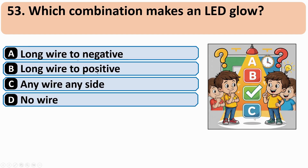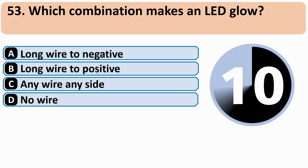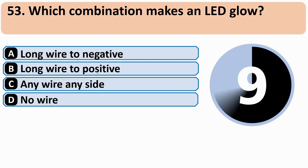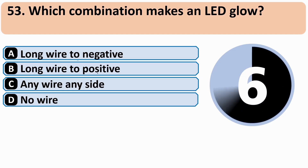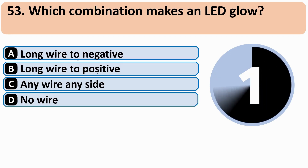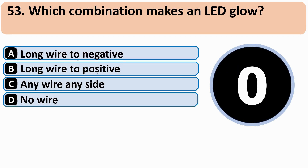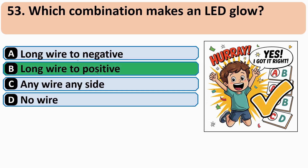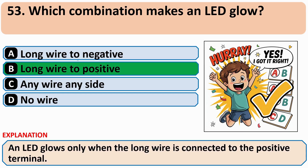Which combination makes an LED glow? The correct answer is B: Long wire to positive.